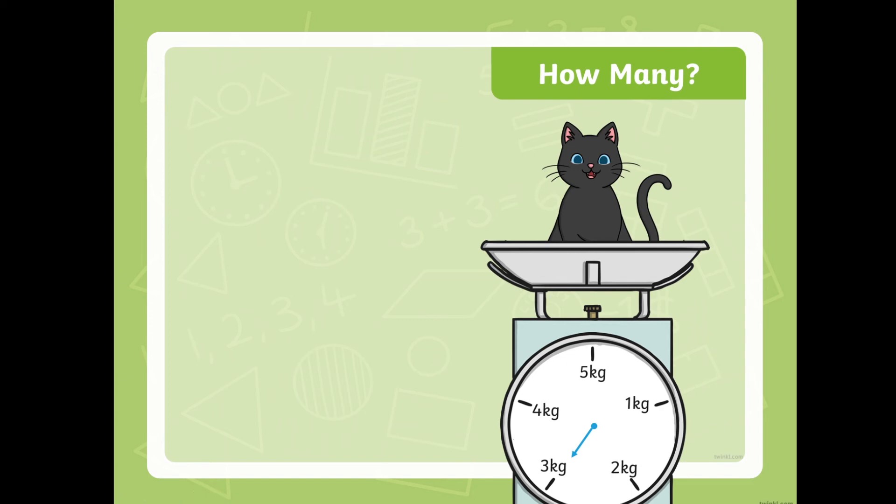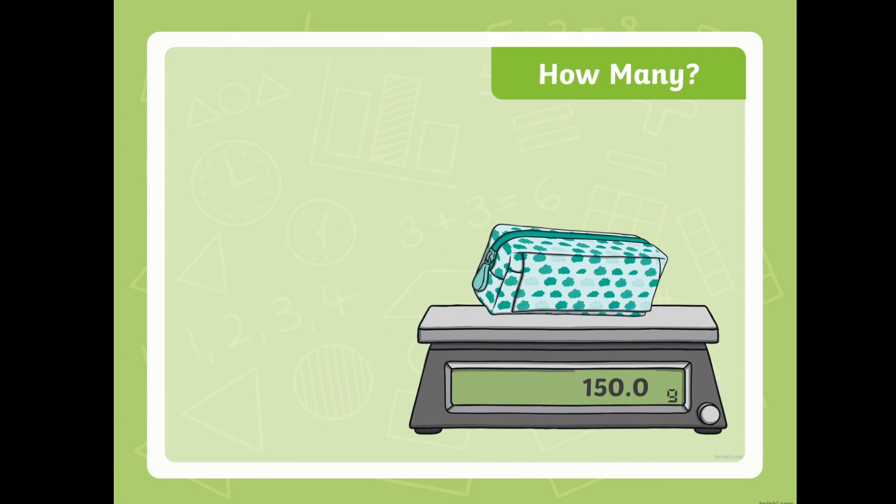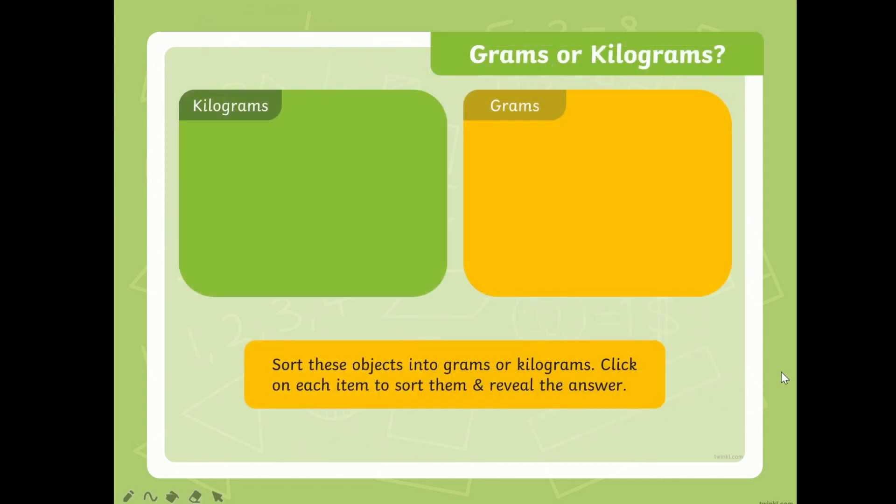How about this cat? Look at the hand, where does it point? It points to three, so we can say this cat is three kilograms. How about this pencil case? How heavy is this pencil case? It's 150 grams. Now I want you to sort these objects into grams or kilograms. Let's click on each item to sort them out.